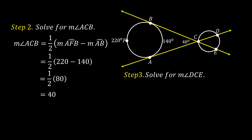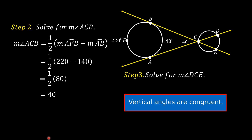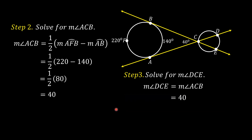Step number three: solve for the measure of angle DCE. Angle DCE and angle ACB are vertical angles. Vertical angles are congruent, and the measures of vertical angles are equal. Therefore, the measure of angle DCE is equal to the measure of angle ACB. Since the measure of angle ACB is equal to 40 degrees, the measure of angle DCE is also equal to 40 degrees.